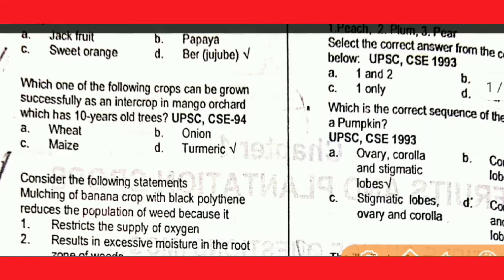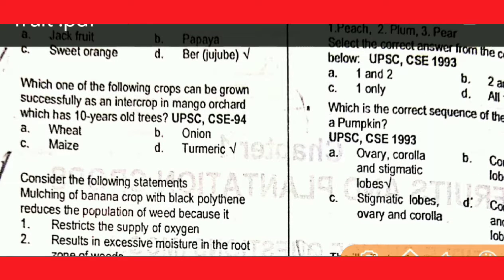Question number two: which one of the following crops can be grown successfully as an intercrop in a mango orchard? The answer is turmeric — option D is correct.